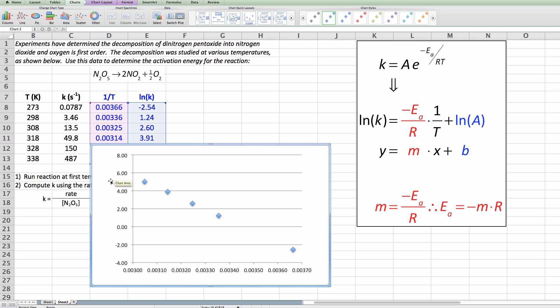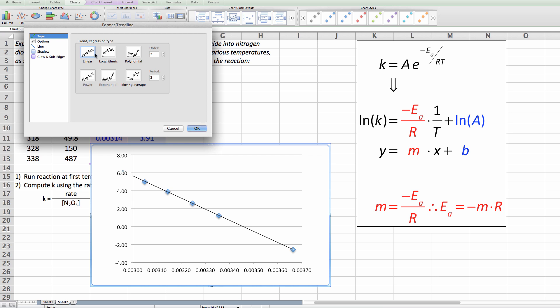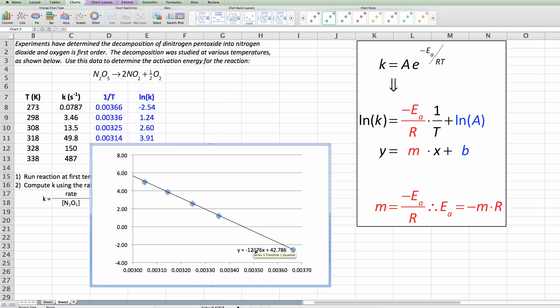Now the y-axis here is going to be the natural log of k. This axis would be 1 over T. All right so now we can get a best fit line to this by adding a trend line. Add the trend line in the linear relationship and the options we ask for the equation to be displayed on the chart and voila we get one right here.